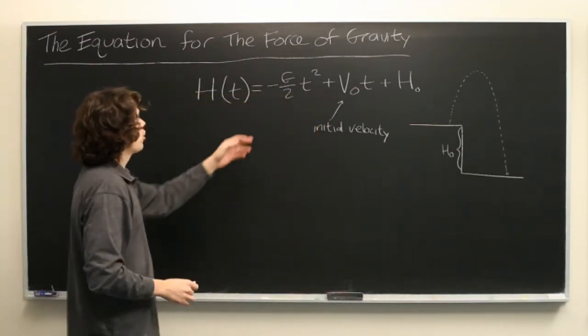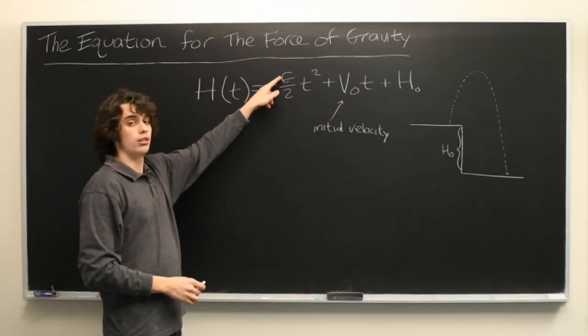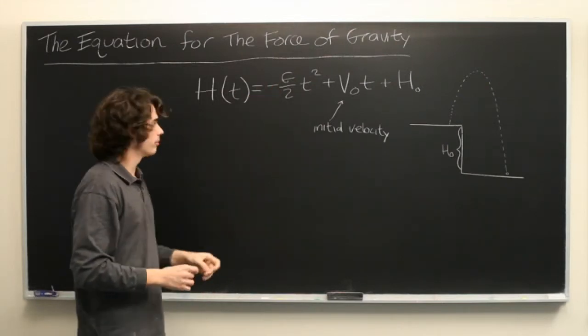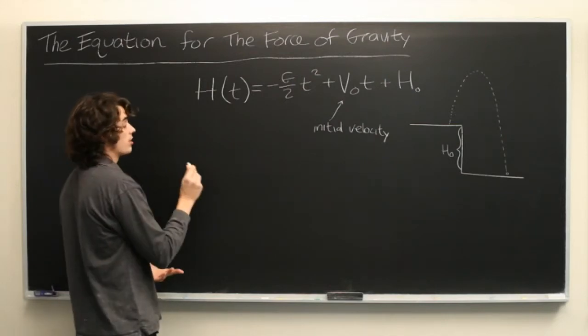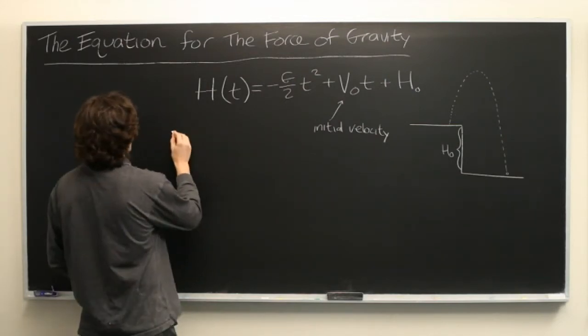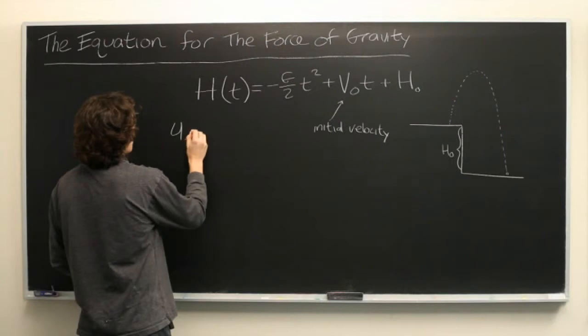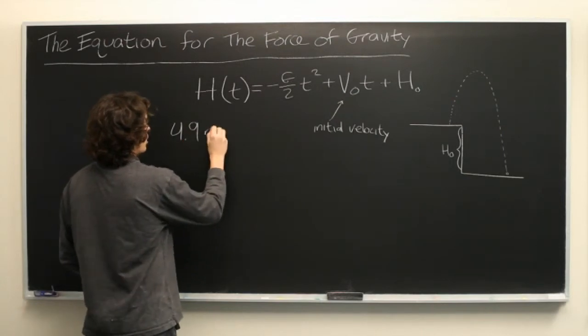The value of g depends on the units that you're using. If you are discussing it in meters per second, then this is 4.9 meters per second.